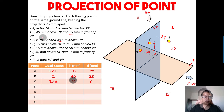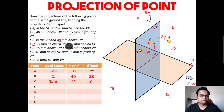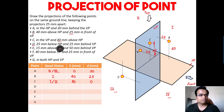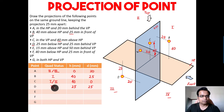Point D: 25mm below HP and 25mm behind the VP. Below HP gives us either third or fourth quadrant. Behind the VP means it's clearly in the third quadrant. So h equals 25 below HP and d equals 25 behind the VP — a clear-cut case of quadrant three.